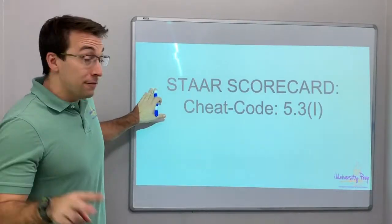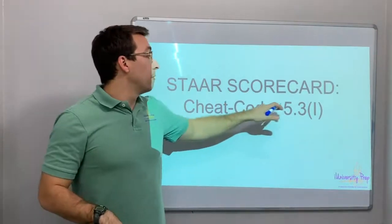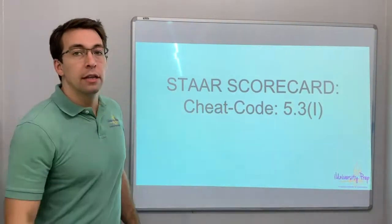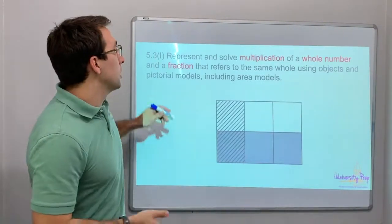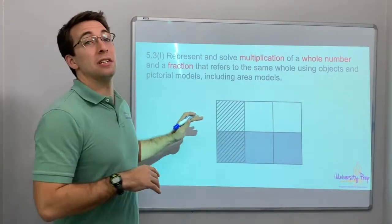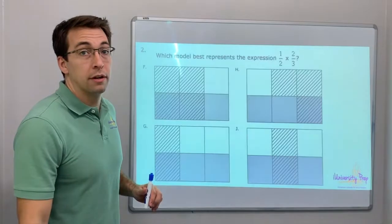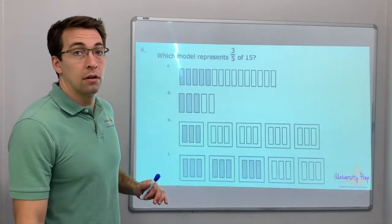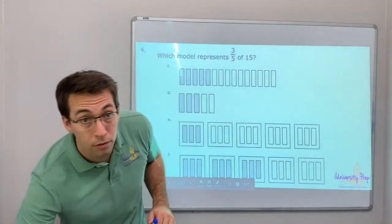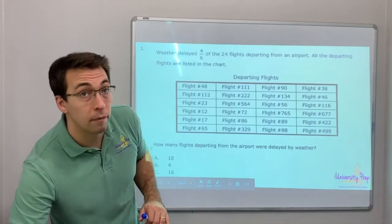Hello friends! Video number two for cheat code 5.3i. We're talking about the multiplication of a whole number and a fraction using pictorial models. So, what's going on here? I think I went one too far. There we go.